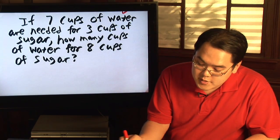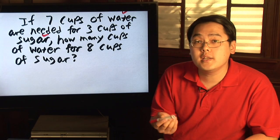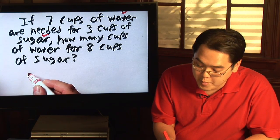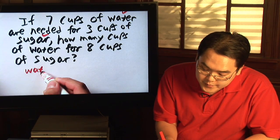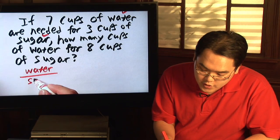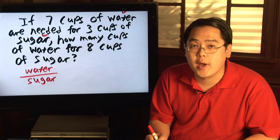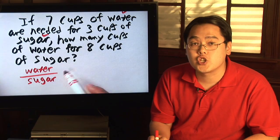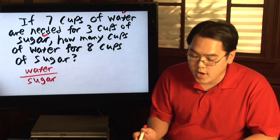Now, since water is mentioned before sugar, one easy way you can form a proportion is to put water over sugar and then put the numbers in that way. But once you make that decision, you need to stick with it throughout the entire problem.